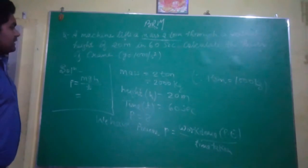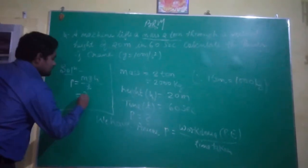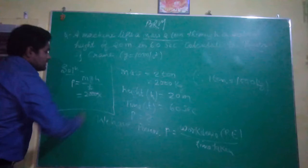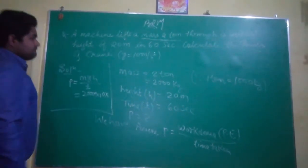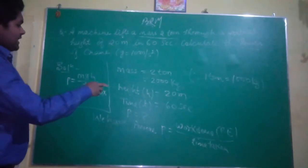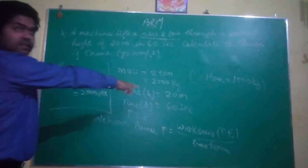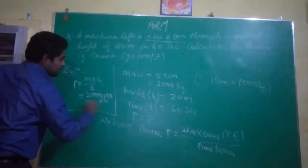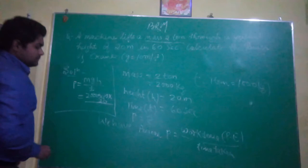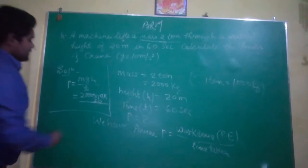Putting the value of all given things: mass equals 2000, G equals 10, and H equals 20. So it will be MGH upon time, which is 60 seconds.